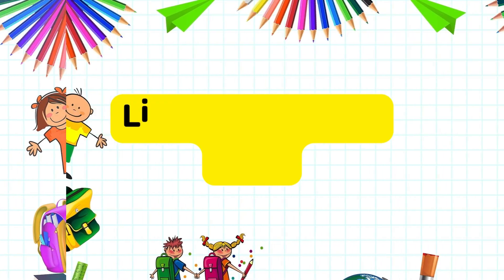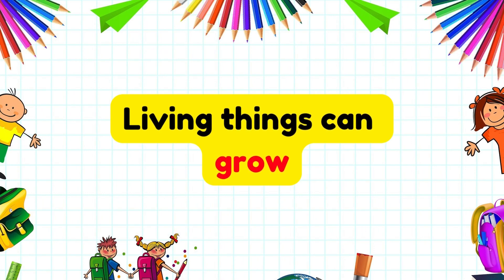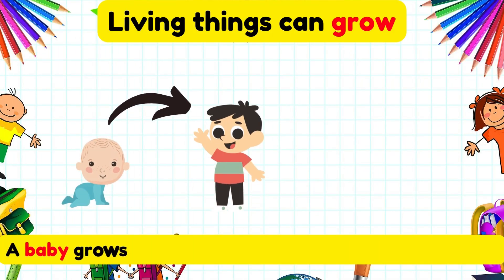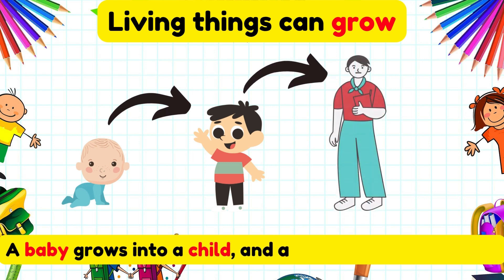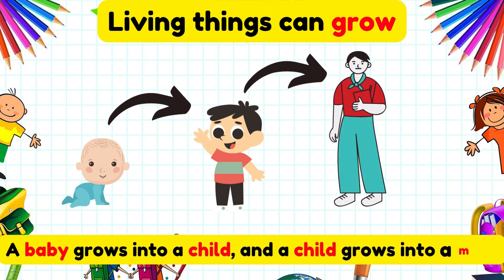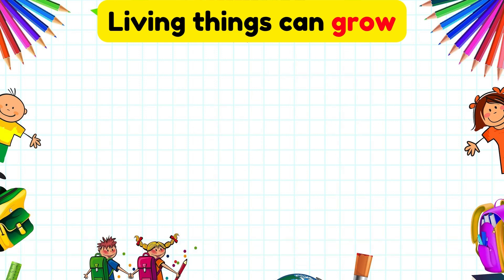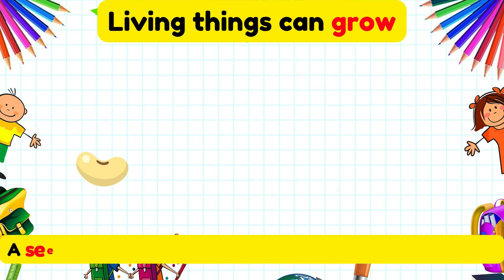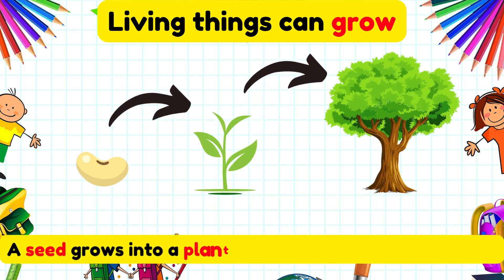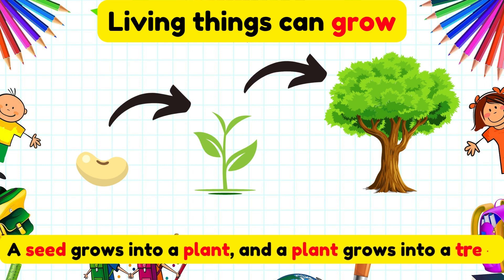Living things can grow, like a baby grows into a child, and a child grows into a man. A seed grows into a plant and a plant grows into a tree.